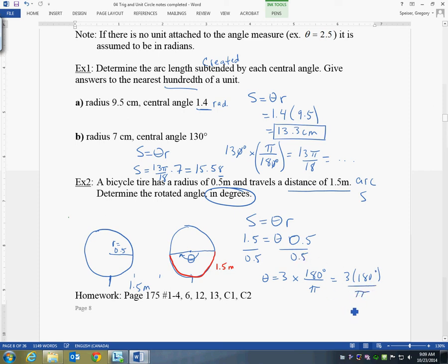And I think that they, it doesn't say whether or not to do exact value or not, right? So if it was an exact value, it would be 540 degrees over pi.